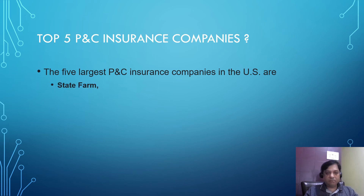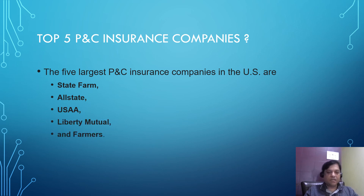What are the top five P&C insurance companies in the US? They are State Farm, Allstate, USAA, Liberty Mutual, and Farmers — the five largest P&C insurance companies.